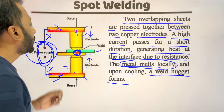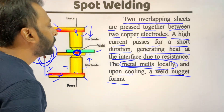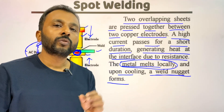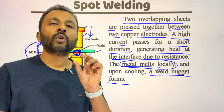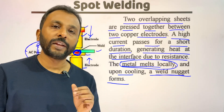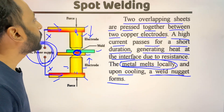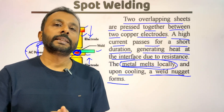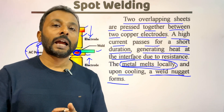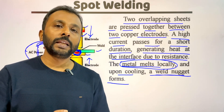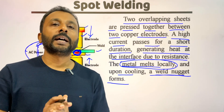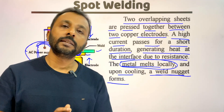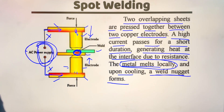This is a welding process where the joint is localized — in a very small spot the joint happens. That is why it is called spot resistance welding process. We use the resistance of electricity, and by the use of electric current and pressure we are welding at a particular spot.